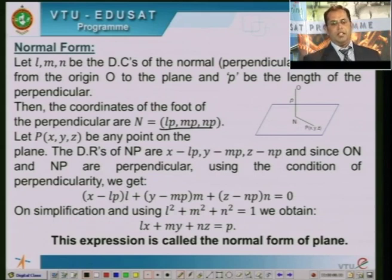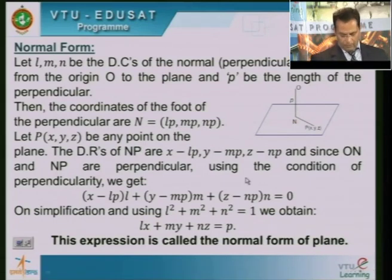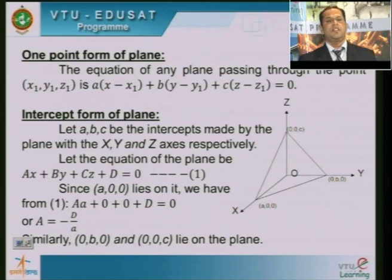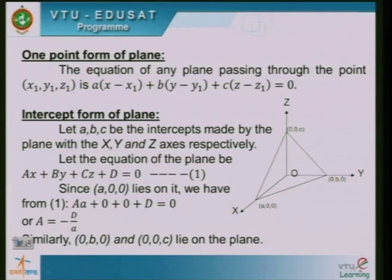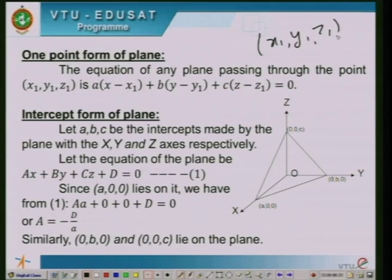The normal to a plane is nothing but a perpendicular drawn to the plane. We now go to the next form called the one point form of a plane. For the one point form, you require only one point, namely X1, Y1, Z1. The equation of any plane passing through the point X1, Y1, Z1 is A(x minus X1) plus B(y minus Y1) plus C(z minus Z1) equal to 0.